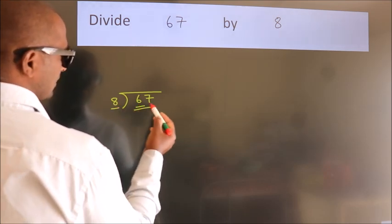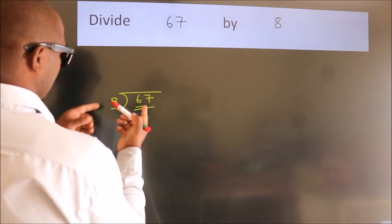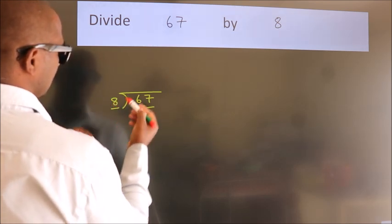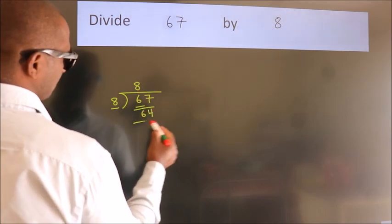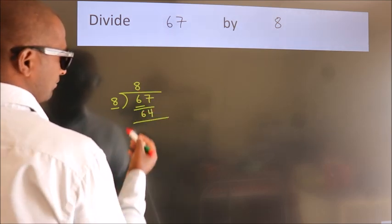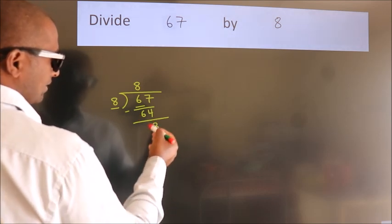should take two numbers, 67. A number close to 67 in the 8 table is 8 times 8 equals 64. Now we subtract and get 3.